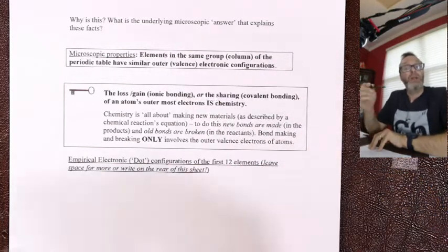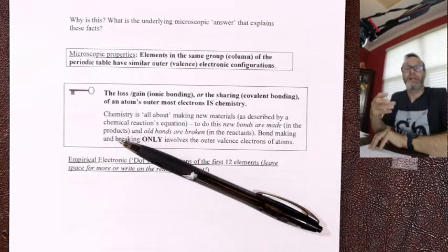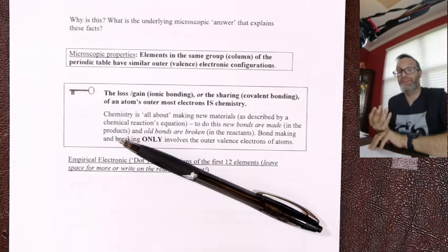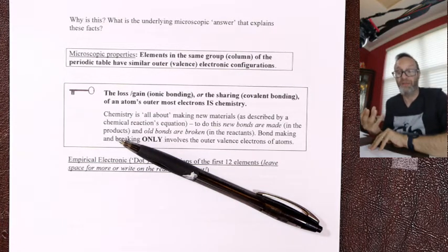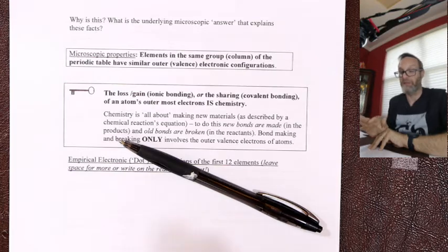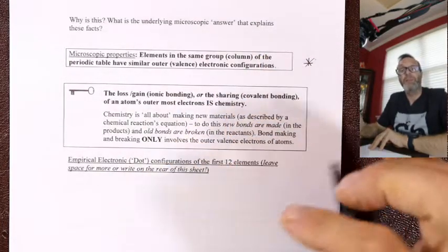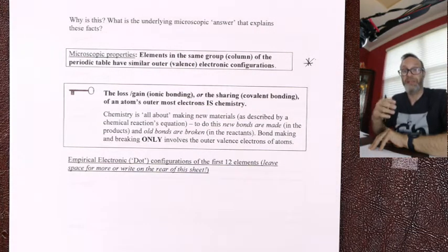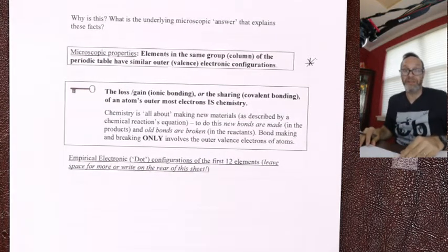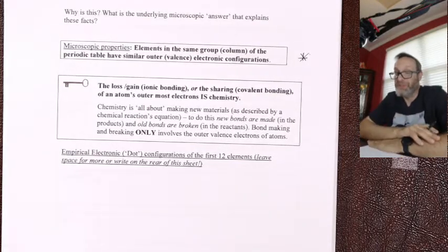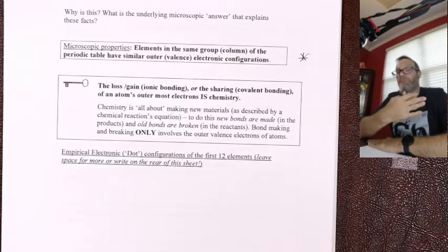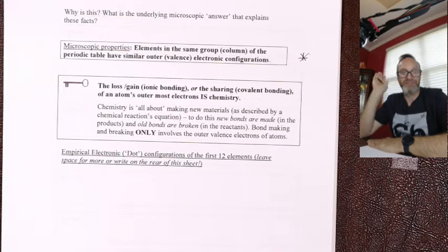Things in the same column in the periodic table have the same electronic configuration of valence electrons — it's like they're all wearing the same shirt. They have the same chemistry because they have identical electronic arrangements, and it's those electrons that on the microscopic level do chemistry. That's the key thing. To explore that, I'm going to relate the periodic table — arranged based on chemistry by Mendeleev — to electronic structure, and then you'll start to see the connection.